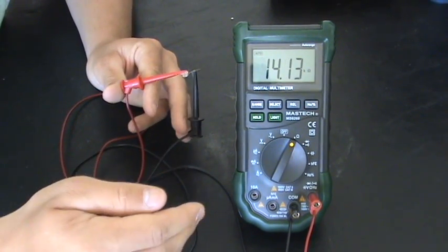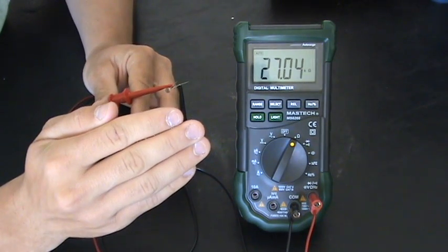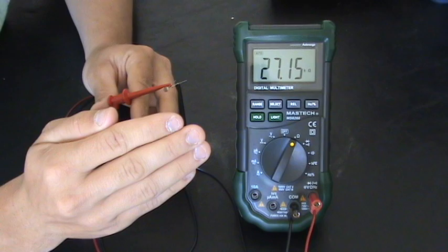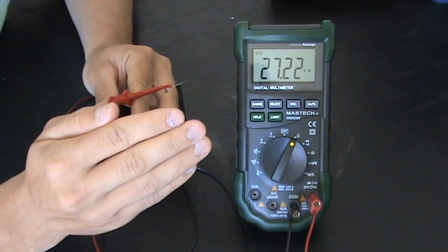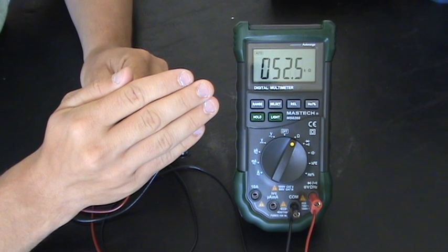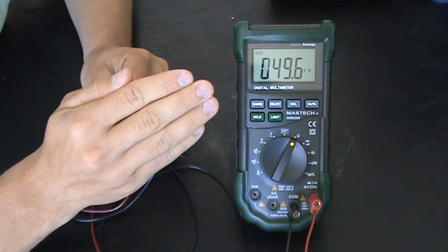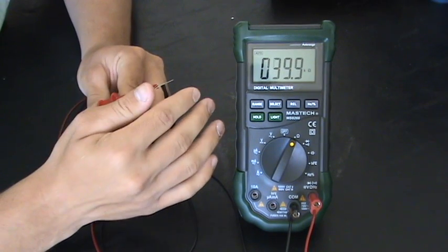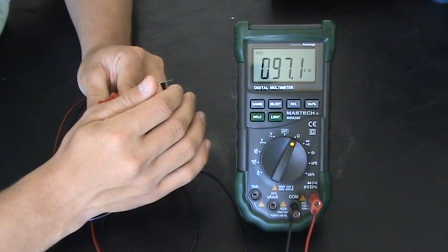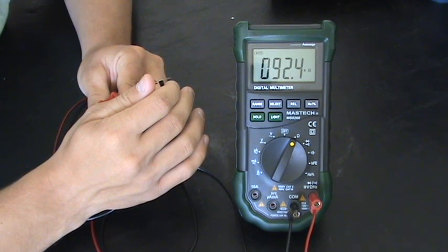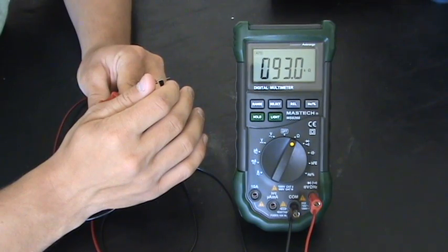But when I darken it up a bit, as you can see, as I block some of the light out, it gives off more resistance. Now it's giving off 27,000 ohms. Let me darken it some more. Now it's giving off about 50,000 ohms of resistance. And let me make it completely dark, put my finger over it. It's now giving off between 90 and 100 thousand ohms of resistance.